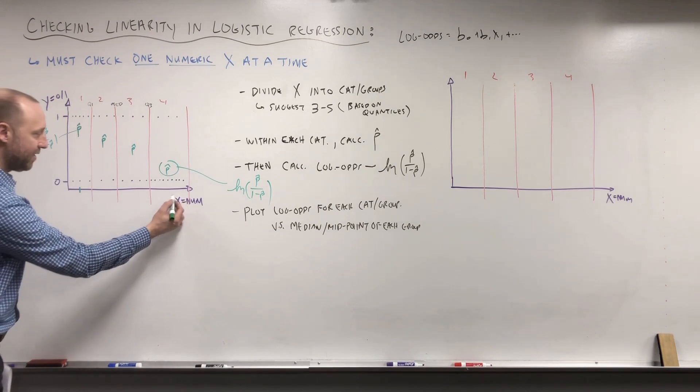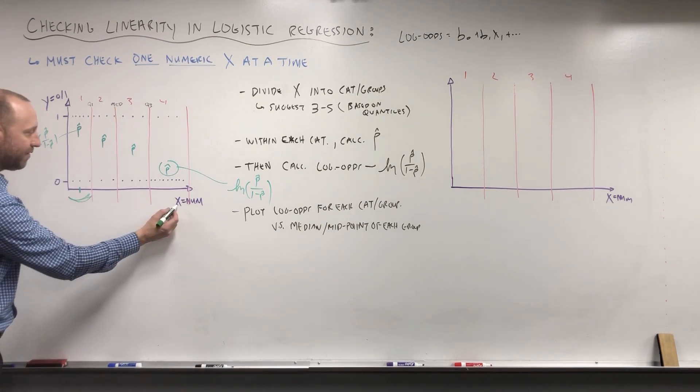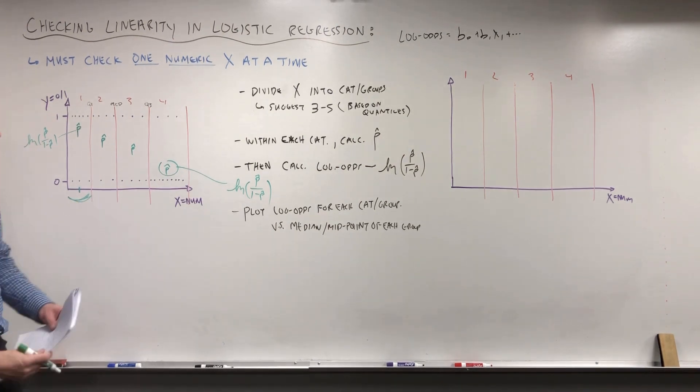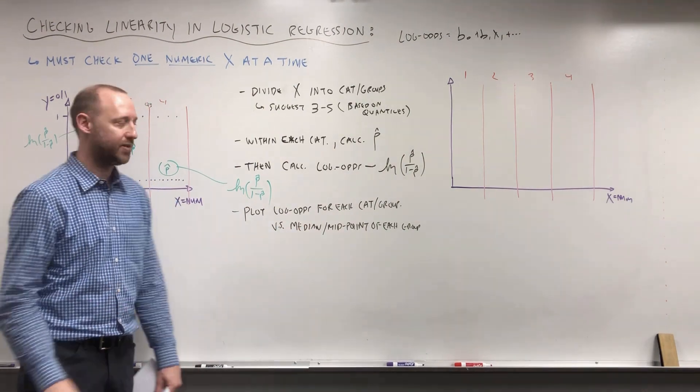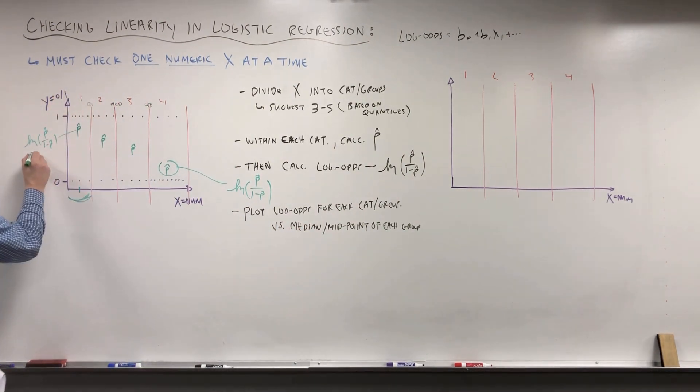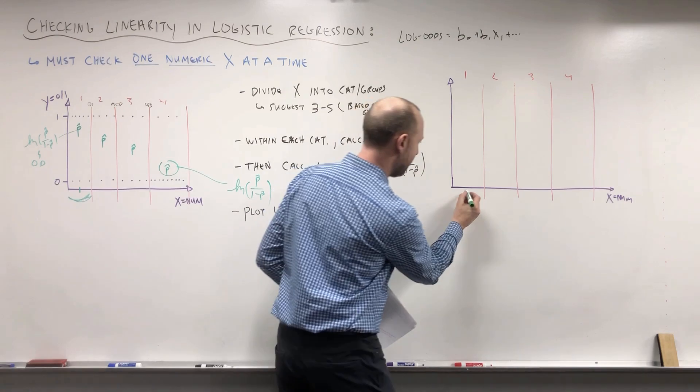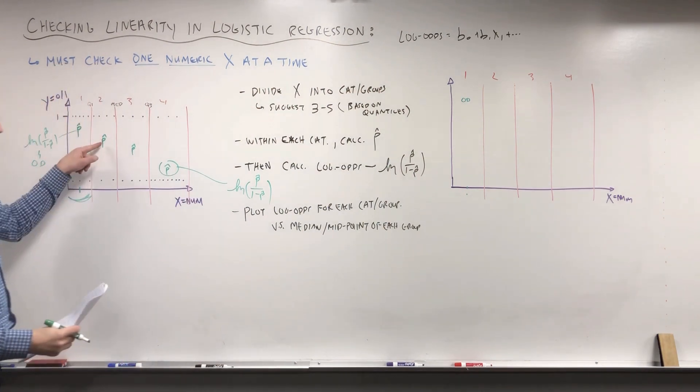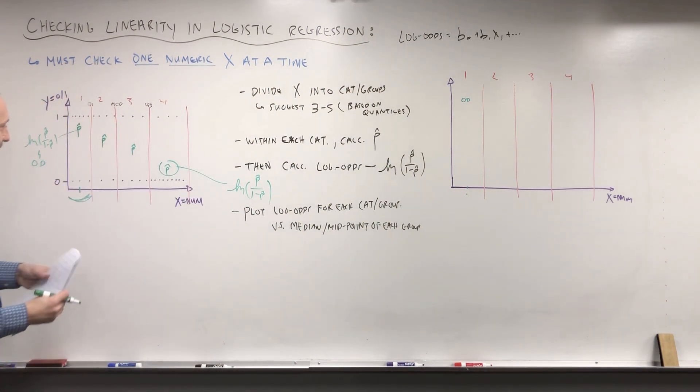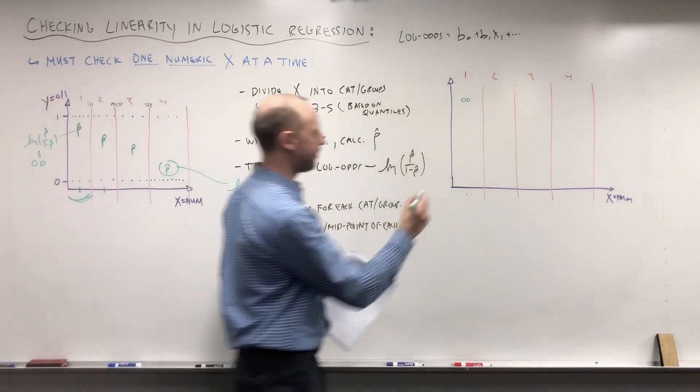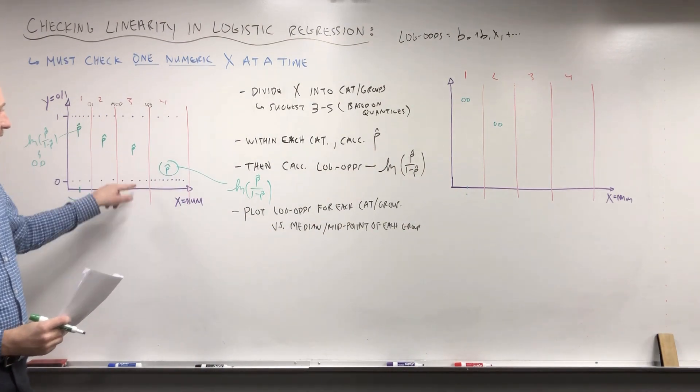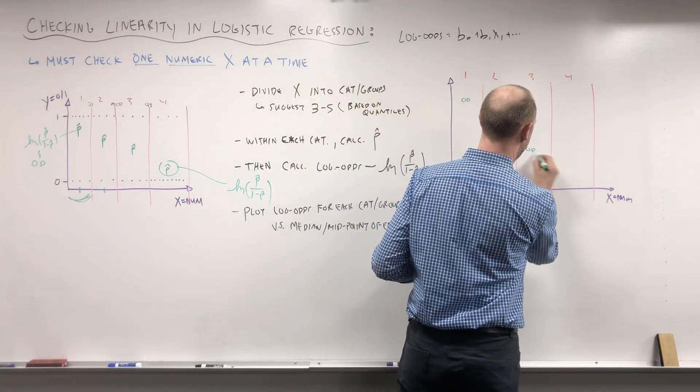So what I'm suggesting is for the value of x, all the people who are in this lowest group, calculate the median x value for them, and I'll talk in a minute why I'm saying median rather than midpoint. So what we're going to do is first roughly the midpoint, plot what the log odds were for group one. For group two, same thing, we calculate the log odds and plot it versus roughly the midpoint there. For group three, again the log odds versus the midpoint, and for group four.